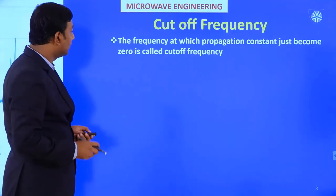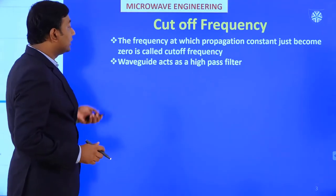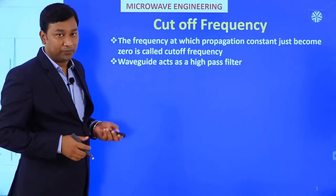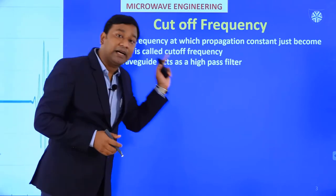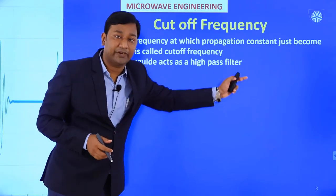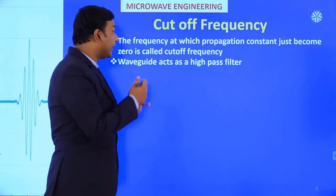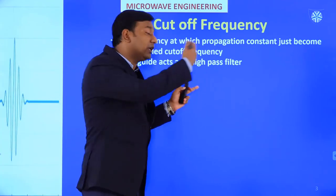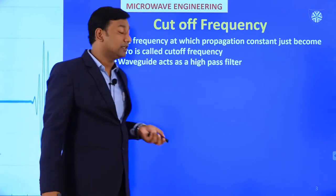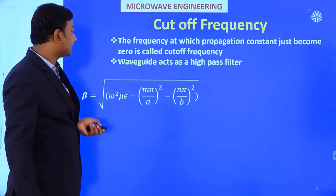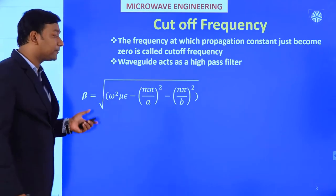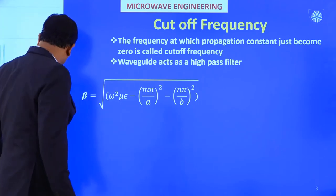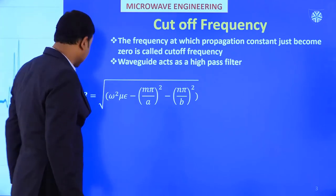We know the waveguide acts as a high-pass filter, so it only passes high frequencies. The frequency range starts from the cutoff frequency up to higher frequencies based on its application. Now we will derive this equation starting from the phase constant.